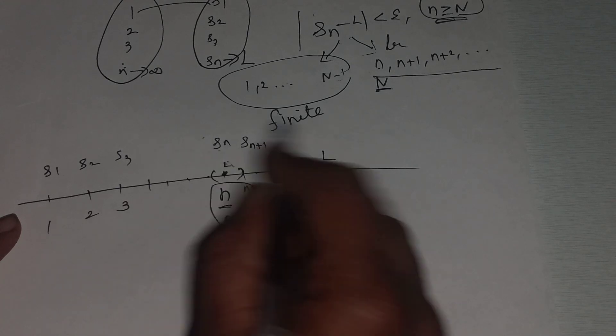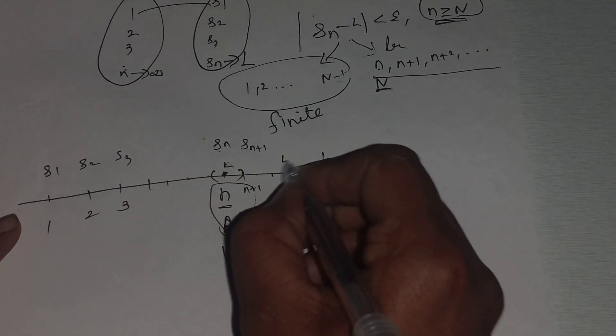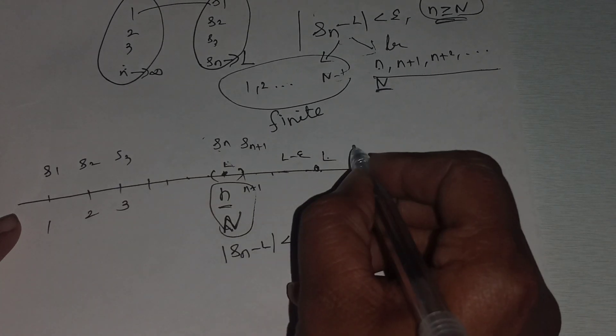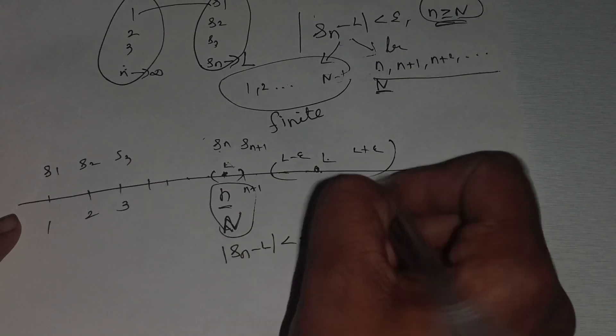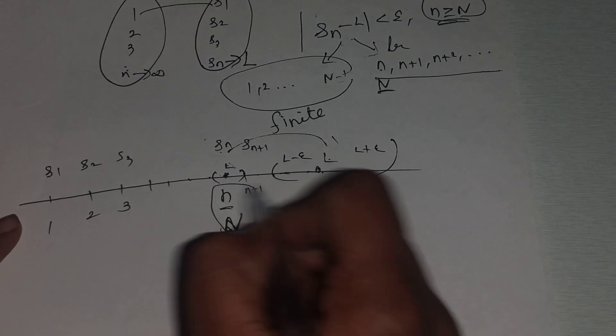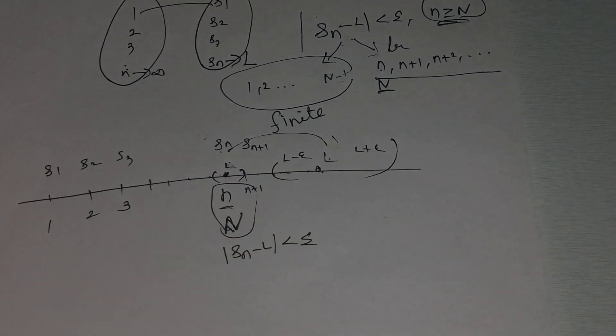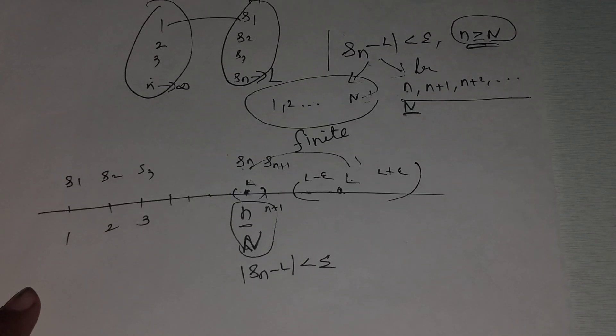The terms all cluster around l. From capital N onward, all the infinite terms lie in the open interval (l minus epsilon, l plus epsilon), which is the definition of the limit of the sequence.